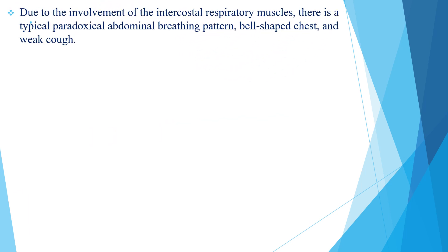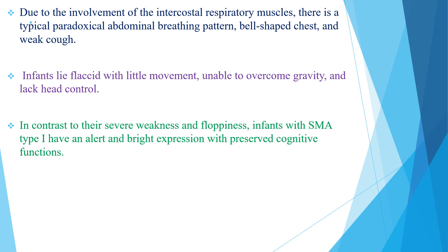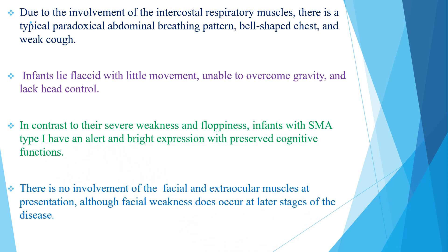Due to the involvement of intercostal respiratory muscles, there is a typical paradoxical abdominal breathing pattern, bell-shaped chest, and a weak cry. Infants lie still with little movement, unable to overcome gravity and lacking head control. In contrast to the severe weakness, infants with SMA type 1 have an alert and bright expression with preserved cognitive functions. There is no involvement of the facial and extraocular muscles at presentation, although facial weakness does occur at the later stage of the disease.